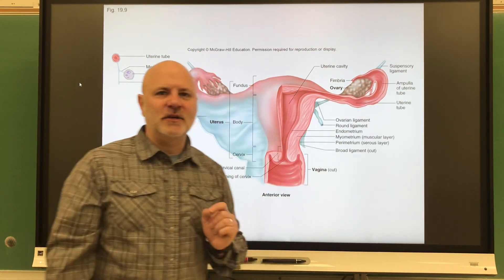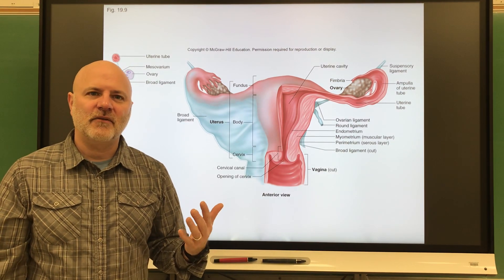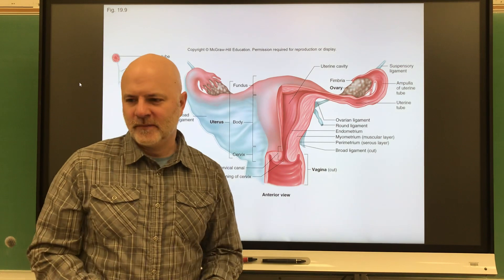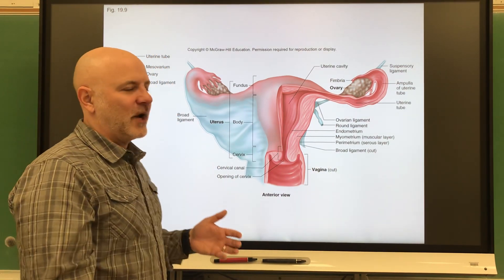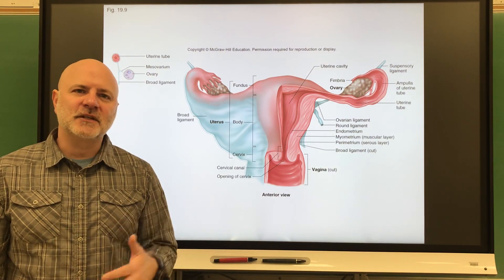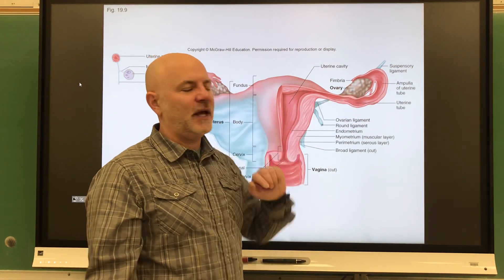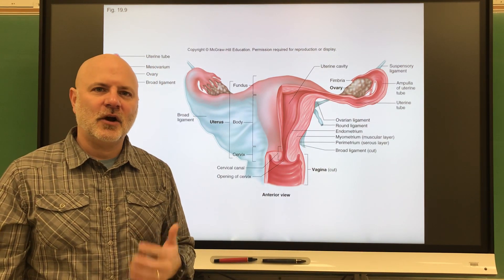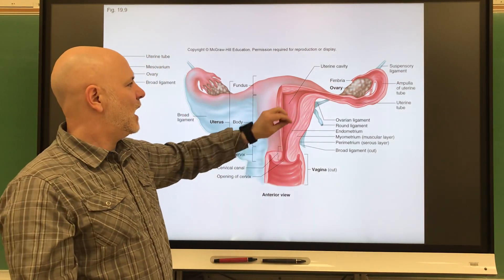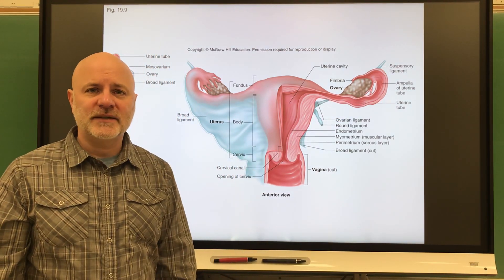Sperm can live in the fallopian tubes for about six days. So if a woman has multiple partners around her 24-hour ovulation period, it could be any one of those guys — and this is what keeps Maury Povich in business. In an ectopic pregnancy, the embryo implants in the wrong place — typically the fallopian tubes, but it can also implant in the ovary. Both can cause life-threatening situations for the mother because these structures are not made to expand; they can tear and cause internal bleeding.